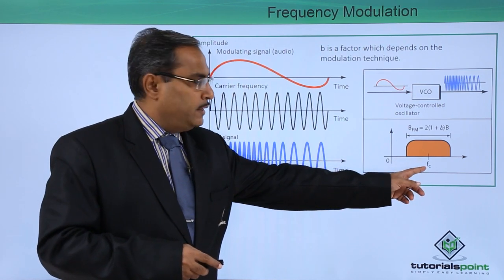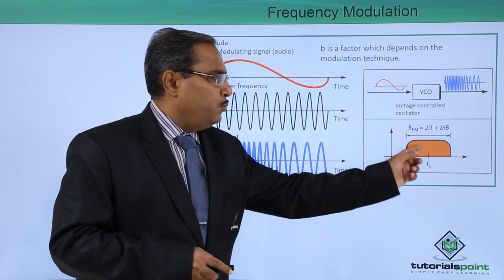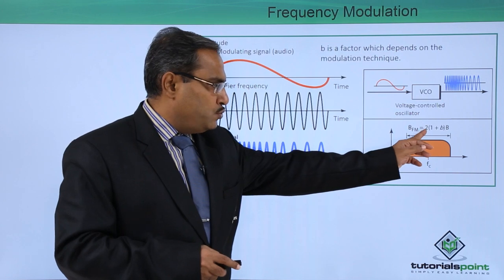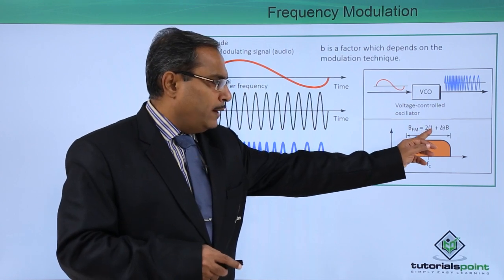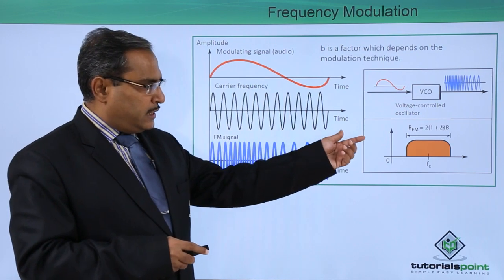Where this FC is there, it is having this particular band pass. This is the band within which the energy will be high, and here it is 2 plus 2 into 1 plus B into capital B. That is the expression.